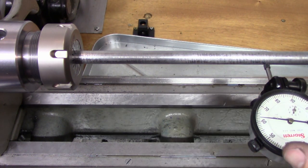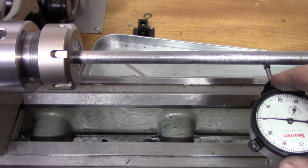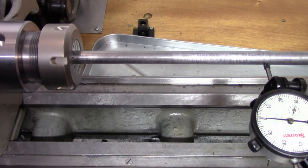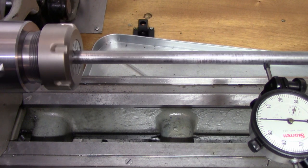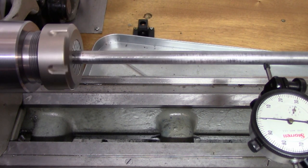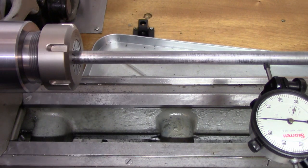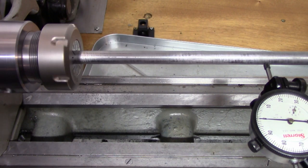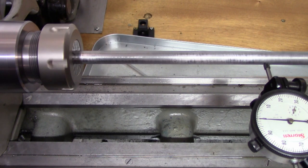Before I was getting about four or five thousandths and now you can see this is on ground stock here. We're getting about a half to one thousandth at the most out there at six inches.